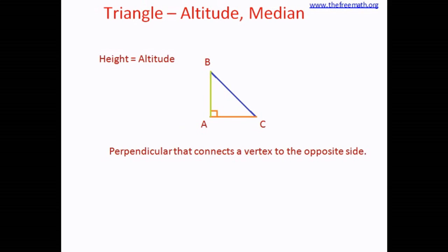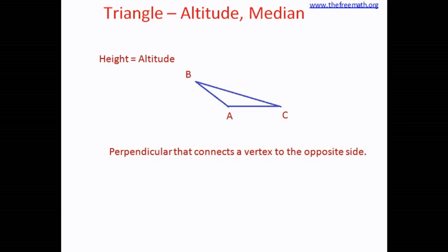That happens when the triangle has a 90-degree angle. Can you think of a scenario where the altitude would be outside the triangle? Consider an obtuse triangle. If you take vertex B and try to draw a perpendicular to the opposite side, it will not be inside the triangle. You will have to extend the side AC outside the triangle to draw the perpendicular from vertex B. So the altitude is inside for an acute triangle, is one of the sides for a right triangle, and is outside for an obtuse triangle.